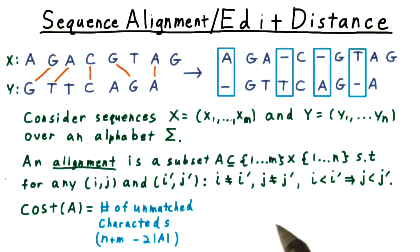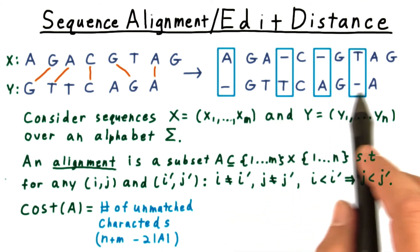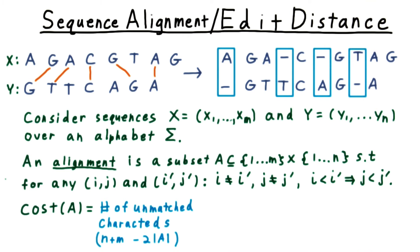The cost of an alignment comes from two sources. One is the number of unmatched characters, which we can write mathematically as n plus m minus twice the size of the alignment. This corresponds to the number of insertions or deletions, or matching with these dashed characters in this figure.